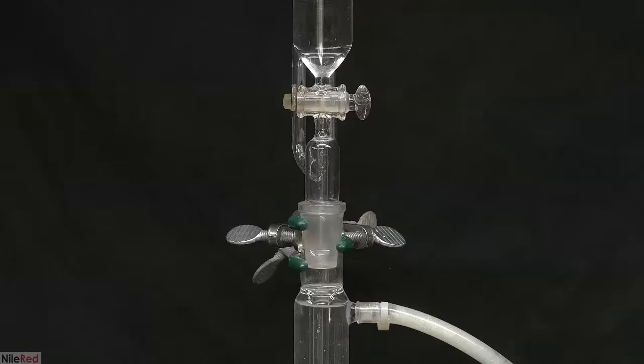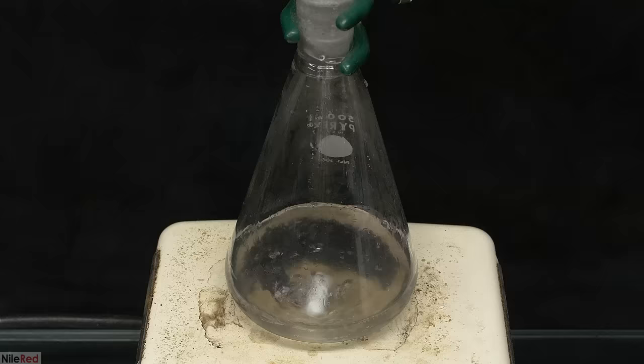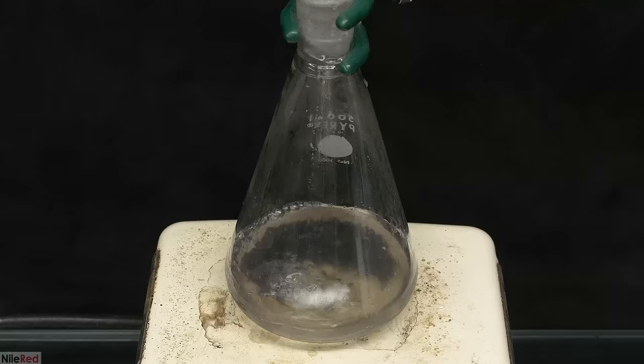Then, I turn on the stirring, and I start to add it slowly. The addition of the peroxide is exothermic, so the reaction mixture is going to start heating up. The goal is to keep adding it until the solution reaches its boiling point, and then to adjust the rate to keep it boiling only slightly.